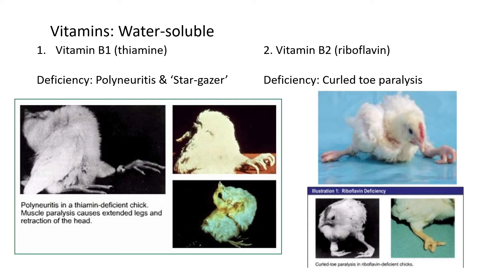Now we move on to vitamins. Vitamins are divided into two different groups: those that are water soluble and those that are fat soluble. It just means the vitamins are dissolved in animals' bodies either in water or in fats, and also transported via water or fat throughout the rest of the body. You must be able to differentiate between water-soluble and fat-soluble vitamins.